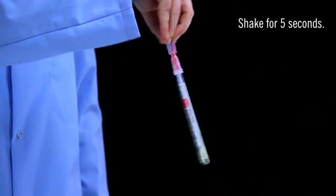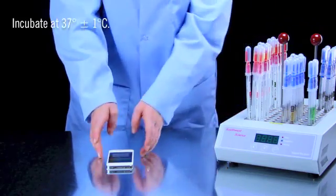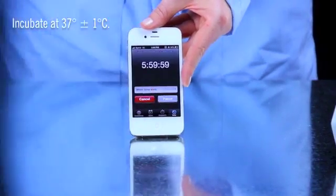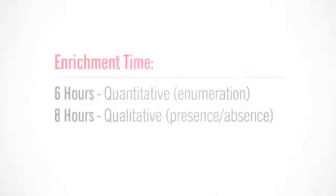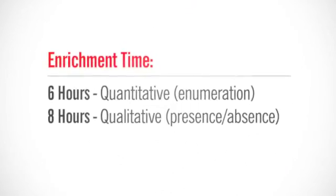Replace the swab in the tube and shake for 5 seconds. Incubate the enrichment device at 37 degrees Celsius. For enumeration or quantitative measurement, set the timer for 6 hours. For presence-absence testing or qualitative measurement, set the timer for 8 hours.